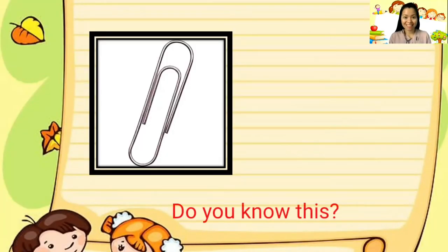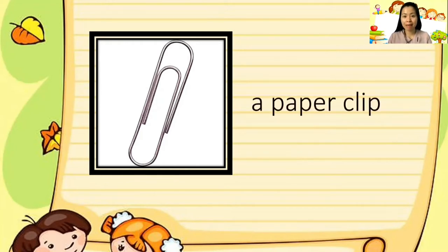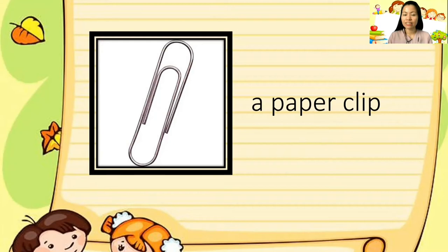Let's go and learn more of the things inside the classroom. Do you know this? Yes, we use this one to keep papers. It's a paper clip. You say 'a paper clip.' You're going to use the 'a,' which means one. You can see one paper clip, so instead of saying 'one paper clip,' we say 'a paper clip.' Say it: a paper clip.